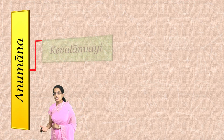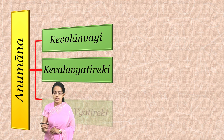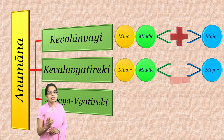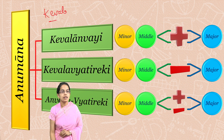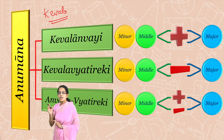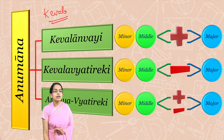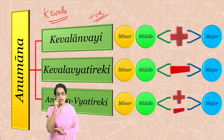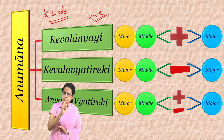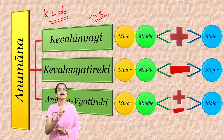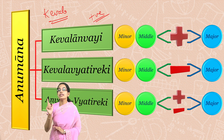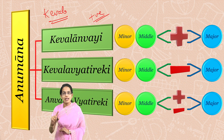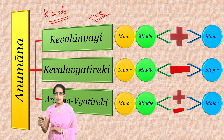There can be three different relations that can exist. The first relation is Kevalya Anvaya, the next is Kevalya Vyatireki, and the third is Anvaya Vyatireki. In Sanskrit, the word Kevalya means complete or whole or supreme. Anvaya means positive, so there is a complete positive relation between the middle term and the major term in Kevalya Anvaya, meaning I cannot produce a negative relation that holds true.